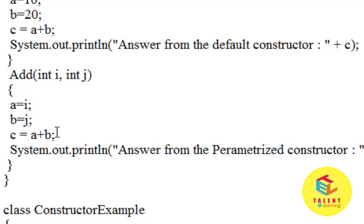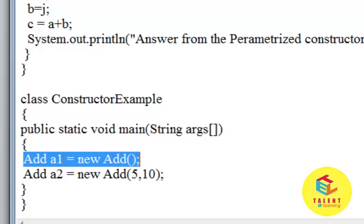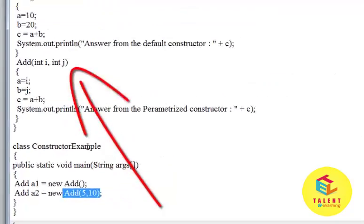Let's take a look how to call this constructor. Here, a1 is the object of class Add, and Add which is followed by the parenthesis is the default constructor. a2 is the object of class Add, and here this is the parameterized constructor which passing the value 5 and 10 as integer variable i and integer variable j.